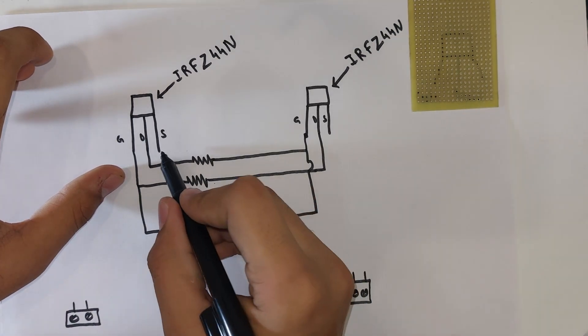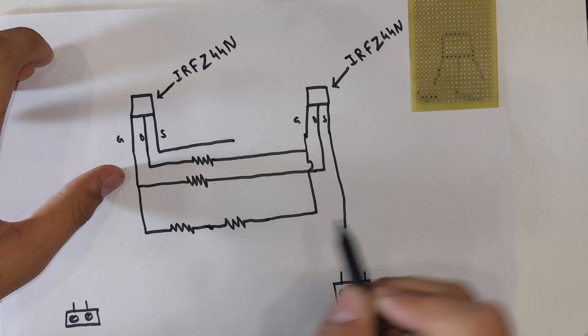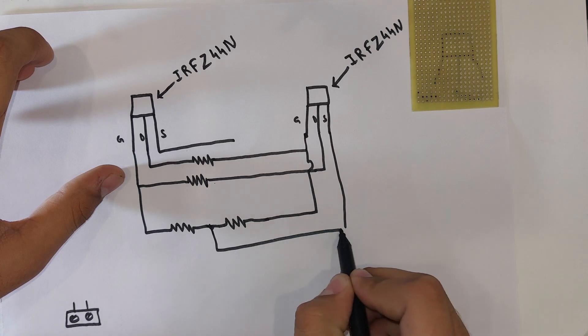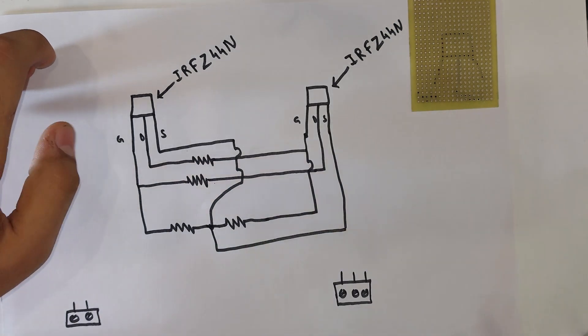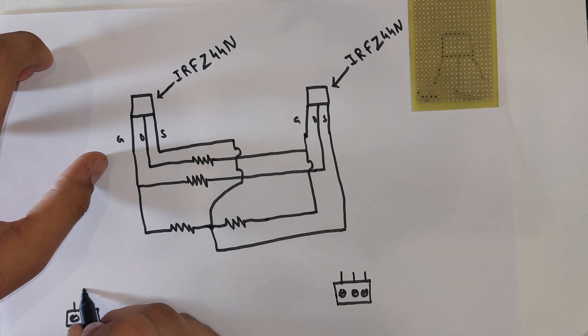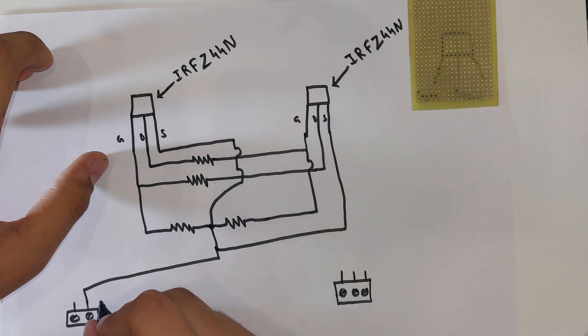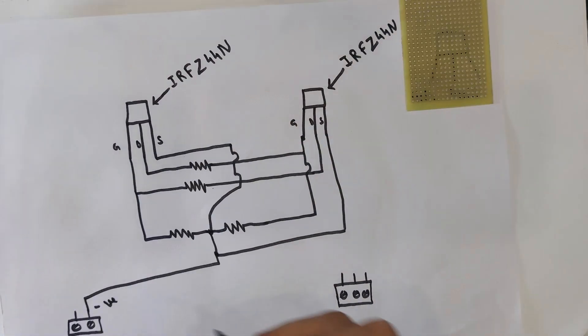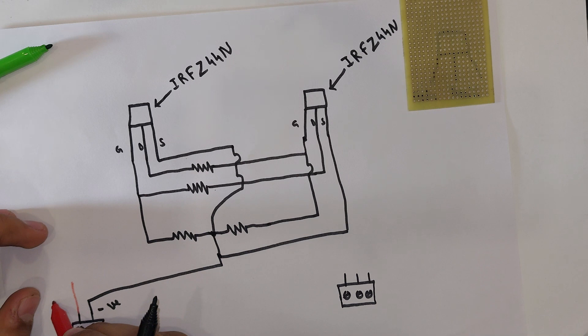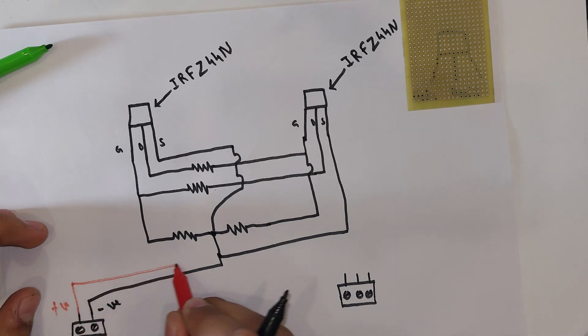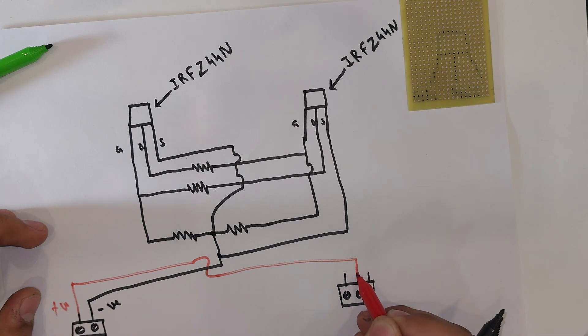We short the source terminals together. We take negative supply and connect to the source terminal, and we take positive supply and attach to the second terminal of the connector.